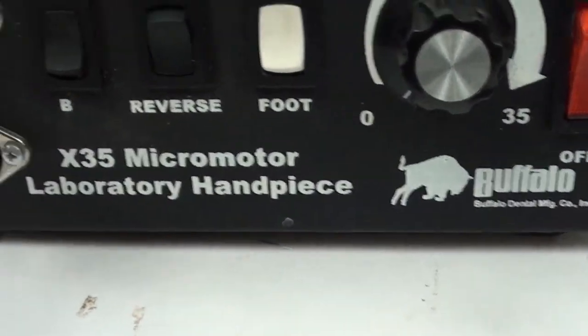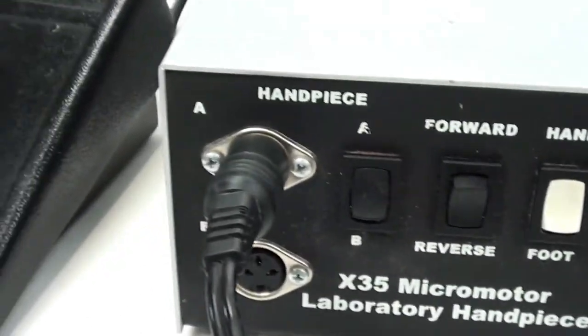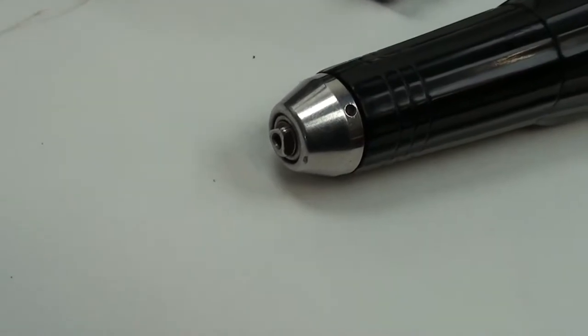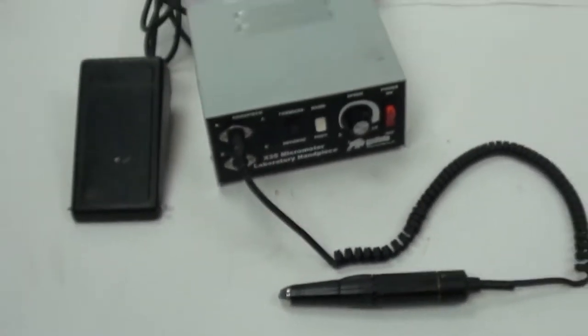You can see there it's Buffalo X35. You've got the handpiece plugged in there. Now we'll go ahead and demonstrate how this machine works.